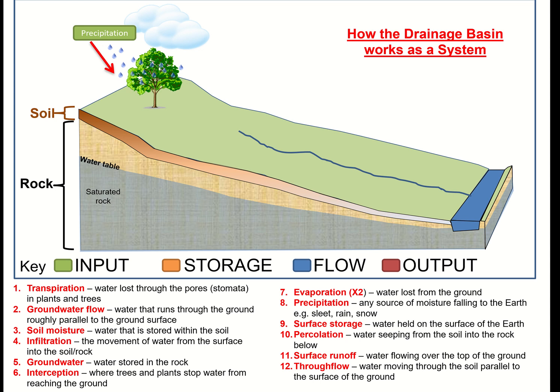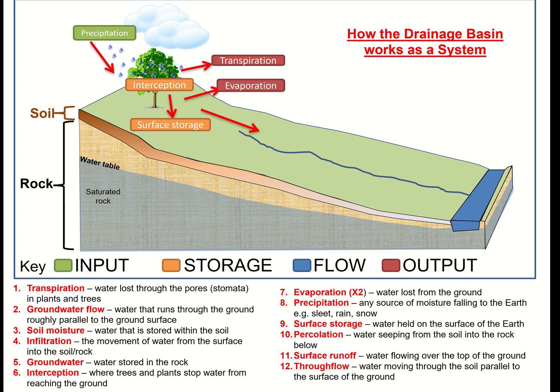Trees and vegetation intercept the water coming down. Deciduous trees will intercept a lot of rainfall but lose their leaves in winter, so they intercept less then; grasses intercept even less. Some water might get stored on the surface as ponds and puddles, some will be evaporated and transpired — those levels vary due to temperature differences — and some water will become surface runoff or overland flow, forming small streams that flow into the main rivers.